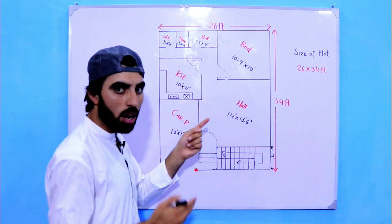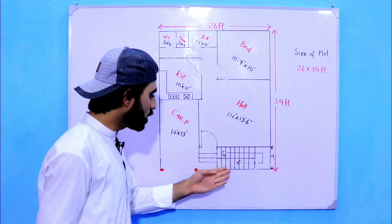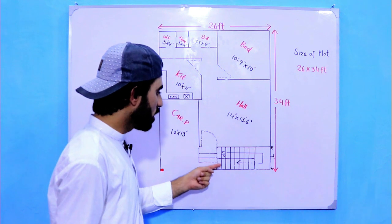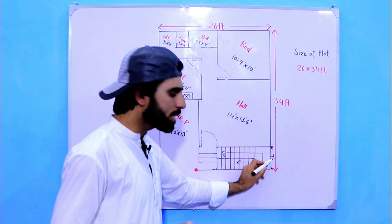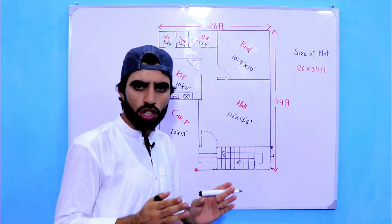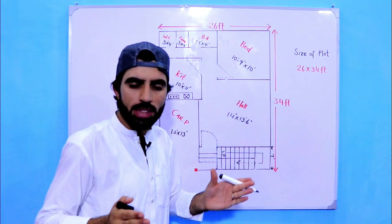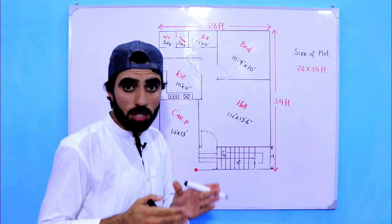Here you can see a staircase, and this is up. Its width is 7 feet, means each step width is 3.5 feet, and this is a dogleg stair for first floor.